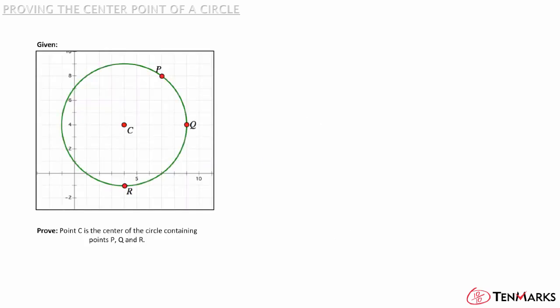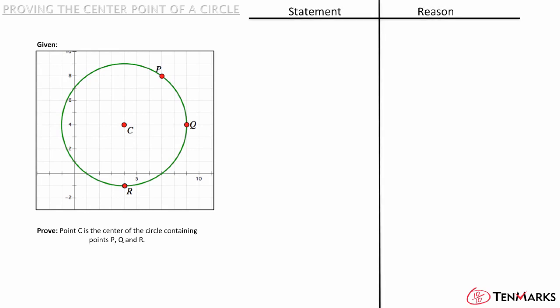Given the following diagram, prove point C is the center of the circle containing points P, Q, and R. In order to prove that C is the center point, you need to prove that it is equidistant from all three points. To do this, you will need to find the distances.